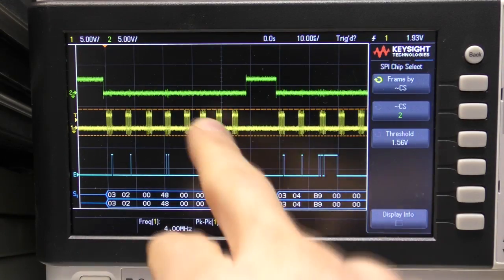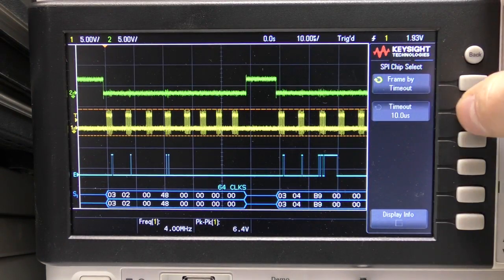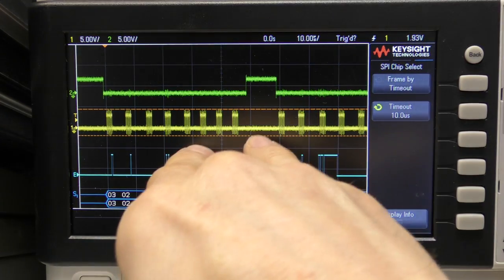So for decoding, you can actually ignore the chip select and tell it to frame by a clock timeout. For example, if I say a clock timeout of 10 microseconds, so that's perfectly one degree. So, if it sees no clocks within 10 microseconds, it assumes it's a new frame.